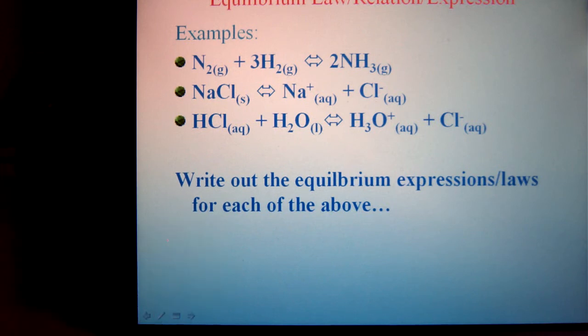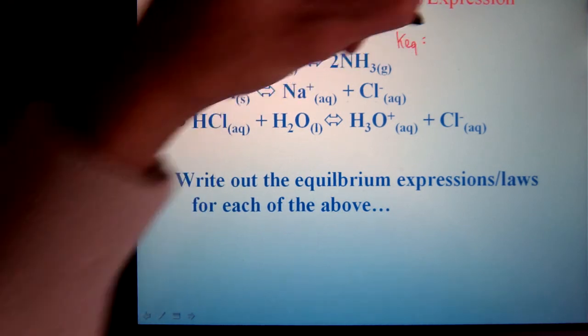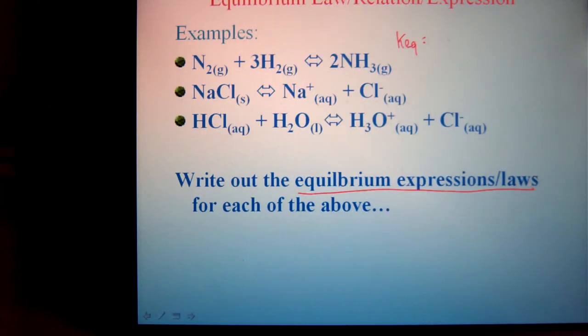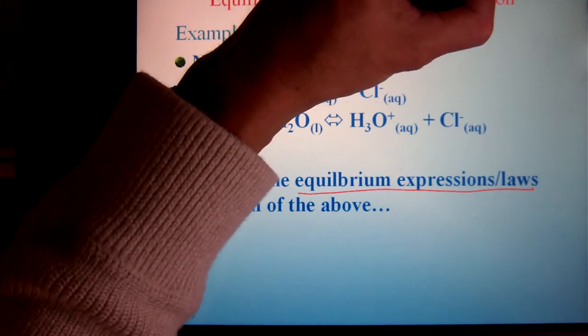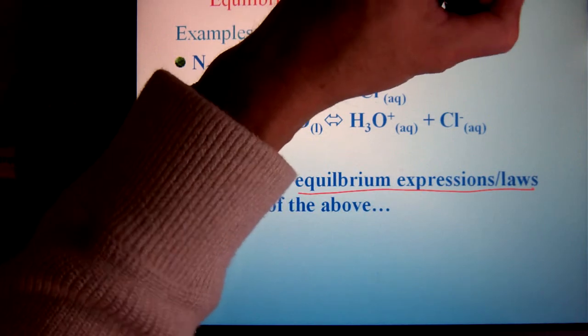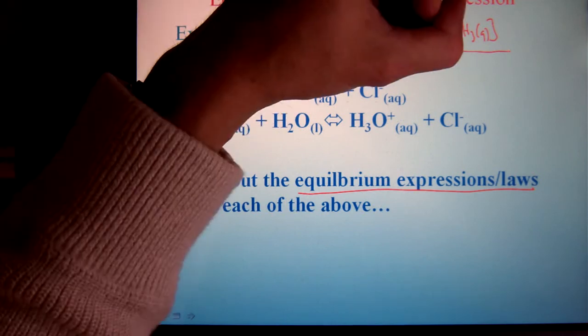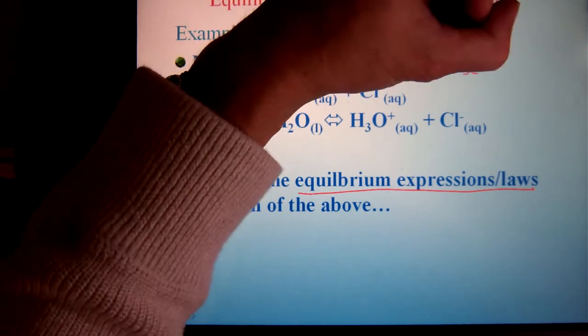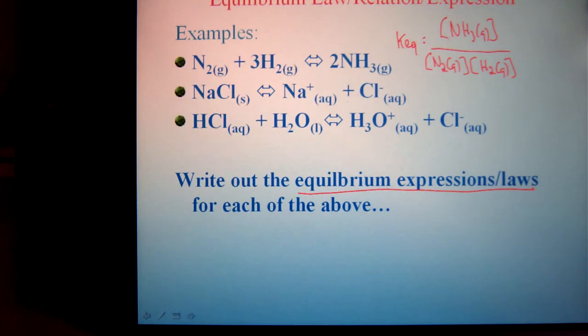So in the first one, formation of ammonia, we always start by writing out what we call the equilibrium expression or equilibrium law. That is the actual chemical expression involving the products and reactants. It's always products first, products over reactants, watch your states of matter. Notice it's just division and multiplication. There's no addition or subtraction in these things.